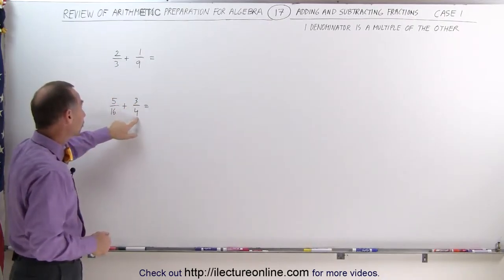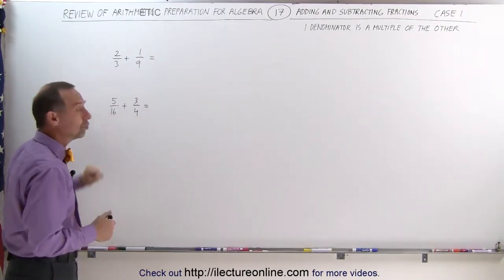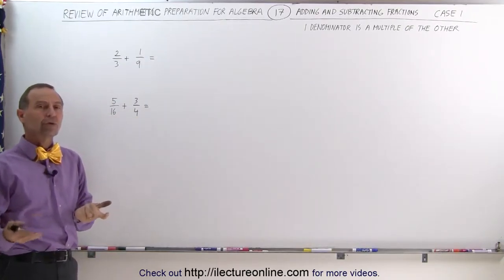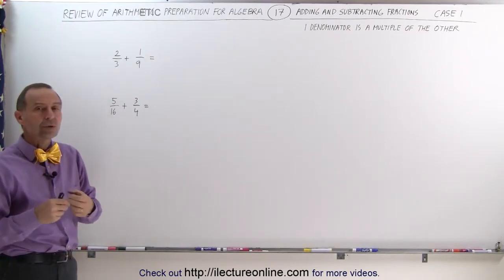And here again, notice that the smaller of the two denominators, 4, fits evenly into the larger of the two denominators, 16. 4 goes into 16 exactly four times. So that's what we call Case 1.